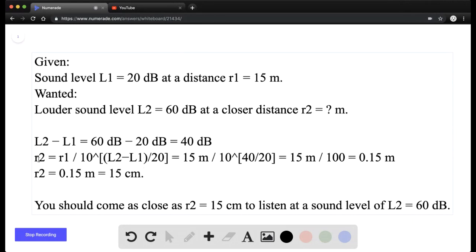You can find the second distance, so you just plug in all the knowns and you get 0.15 meters, which is 15 centimeters. So you have to get as close as 15 centimeters to hear the sound level at 60 decibels between the two people having a conversation.